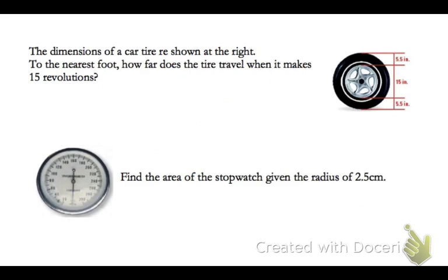Now, the dimensions of a car tire are shown at the right. To the nearest foot, how far does the tire travel when it makes 15 revolutions? Well, a revolution of a tire is the circumference. So I need to find the circumference, and then multiply it by 15.